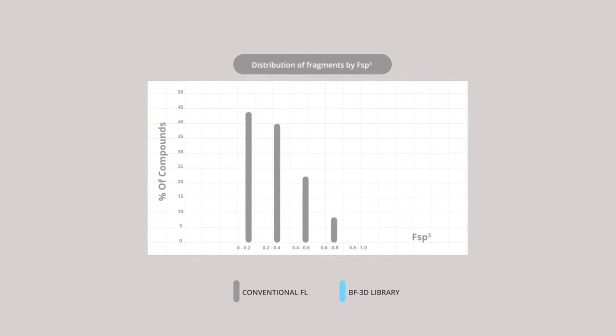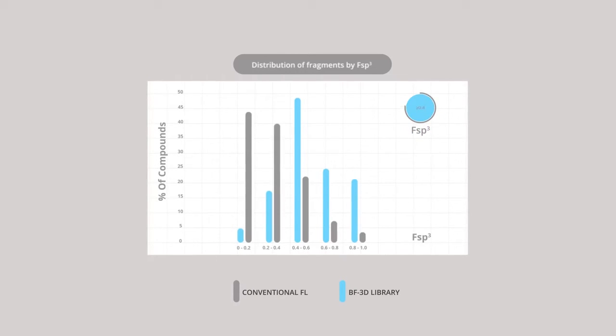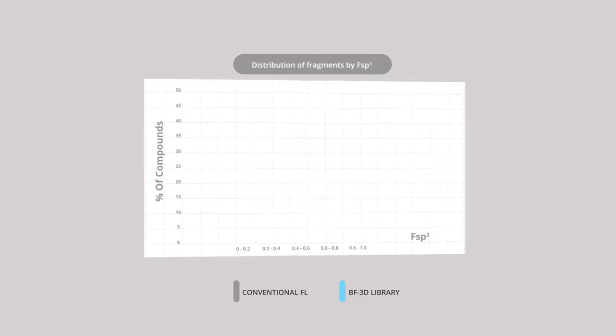Here you can see how the fraction of sp3 bonds in the new fragments library contrasts to our predominantly flat conventional fragment library. More than 80% of the new library members have an fsp3 of greater or equal to 0.4.